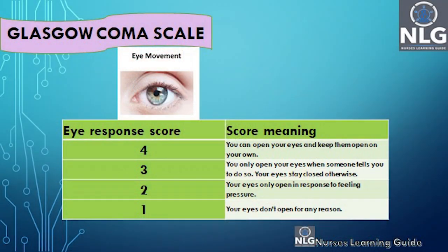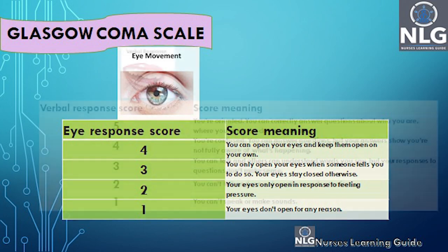For the eye movement component, the response score ranges from 1 to 4, with 4 being the highest. A score of 1 means the eyes don't open for any reason — there is no movement and no response at all. If the response is good, we score them as 4.